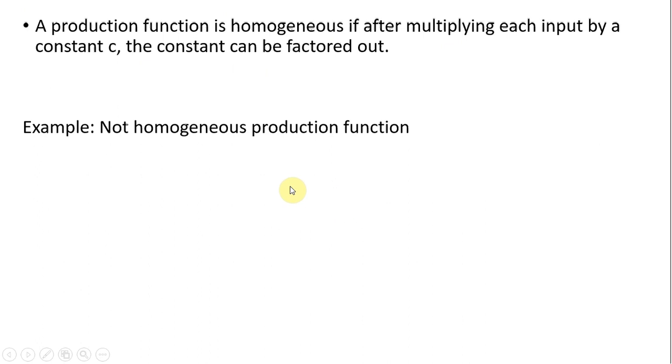Let's start with an example where we're not dealing with a homogeneous production function. So we have this production function, K is units of capital, L is units of labor.